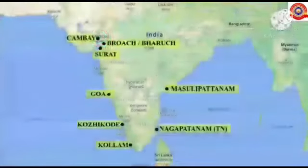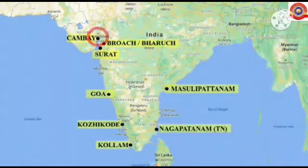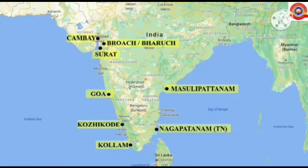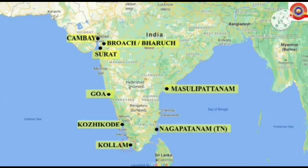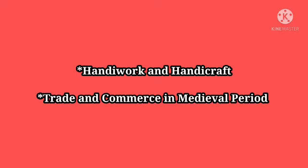The major ports are: first, Khambhat in Gujarat; second, Broach on the banks of the Narmada River; third, Surat; fourth, Goa; fifth, Nagapatnam in Tamil Nadu; sixth, Masulipatnam in Andhra Pradesh; seventh, Kozhikode in Kerala; and eighth, Kollam, also in Kerala.